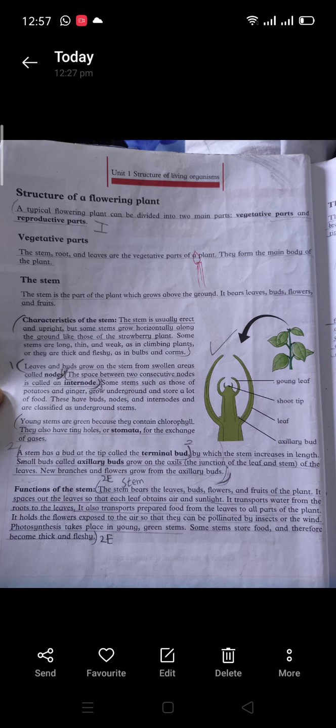Photosynthesis takes place in green young stems. Some stems store food and therefore they become thick and fleshy. So here our topic ends. Alhamdulillah, I have cleared everything. If not, then you can ask me in comments. So Allah Hafiz.